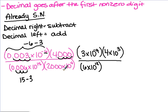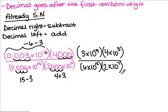For the next number, our decimal needs to go after the 2. It is currently after the 0, which means we move it 1, 2, 3 places to the left, so we're adding 3 to the exponent. We now have 2 times 10 to the 7th, because 4 plus 3 is 7. Now that all the numbers are in proper scientific notation, we need to solve.